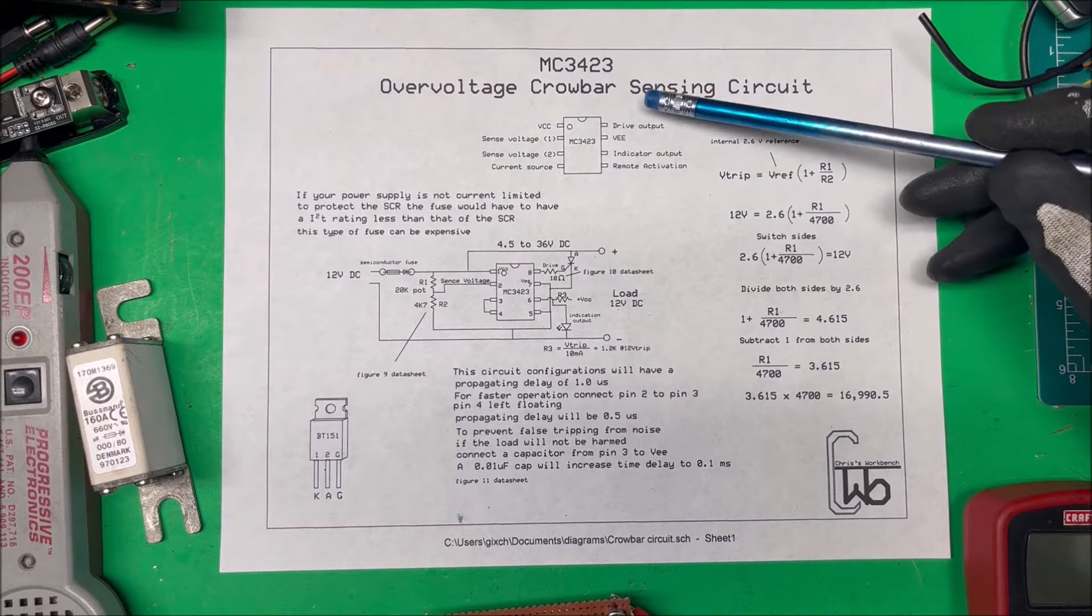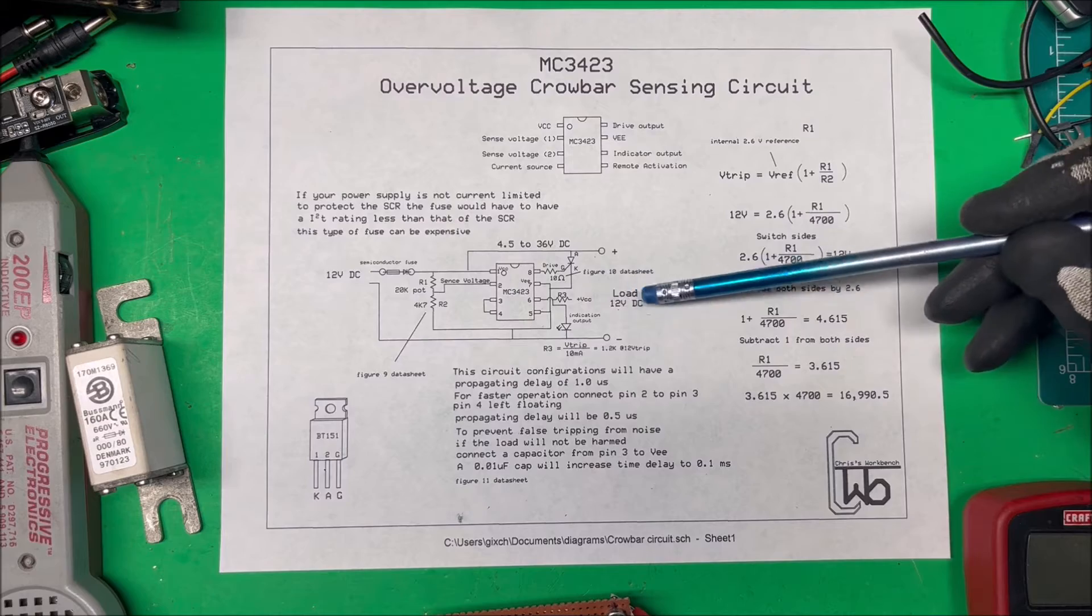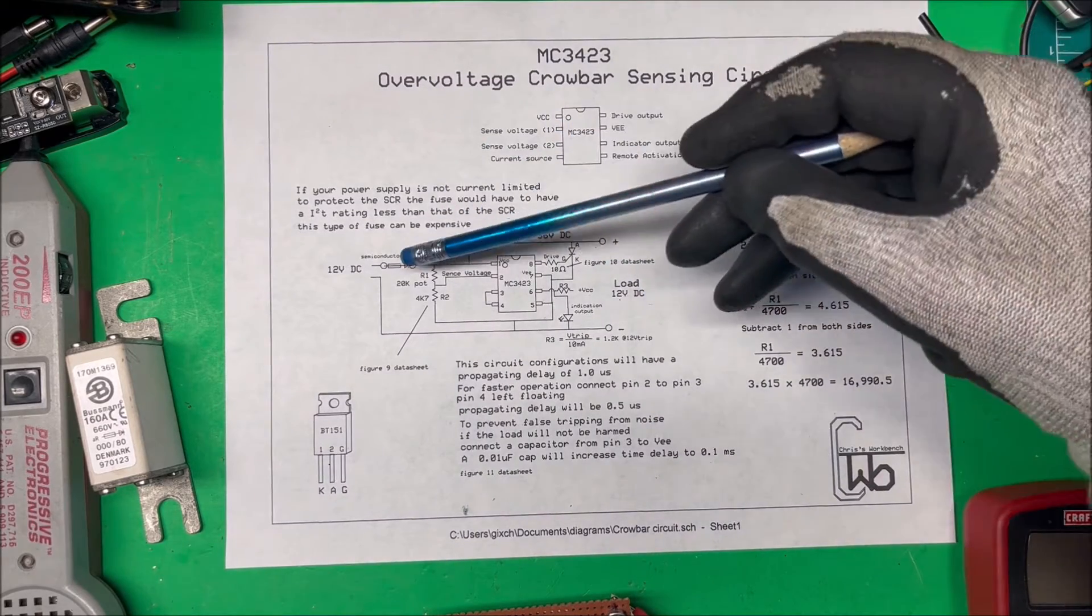Let's talk about a crowbar circuit. What it does is if it detects an overvoltage condition, it just shorts out the power supply, saving your load. Then usually you have a fuse or a current-limited power supply connected to that.